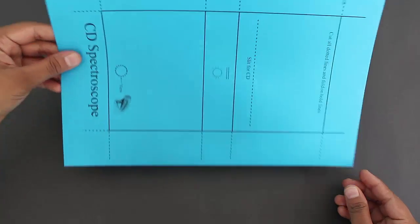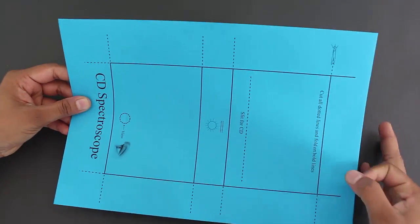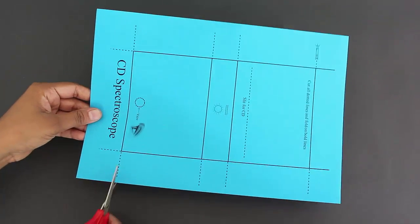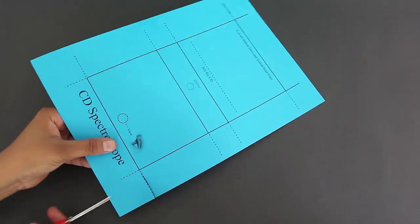The dimensions of the box are given in this diagram. Now first cut two squares on one end of the sheet.